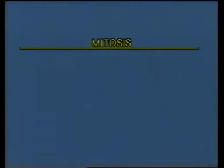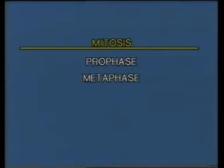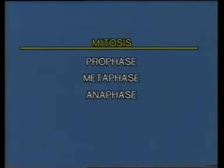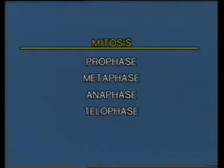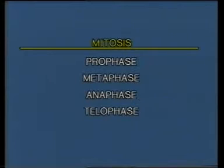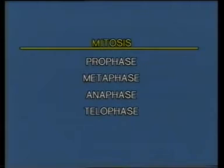Although mitosis is divided into four stages — prophase, where the chromatids line up on the equator of the spindle; anaphase, where the chromatids migrate to the poles; and telophase, where the cell divides into two — it is really a continuous process with no breaks between each phase. Watch mitosis again at two different speeds. In the slower version, the numbers in the bottom right-hand corner of the frame are to be used in identifying the different mitotic phases.